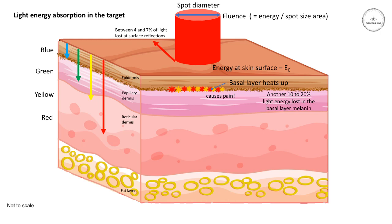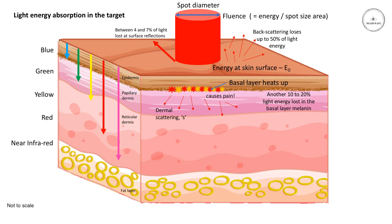The light that does get into the dermis is then scattered about all over the place. Some of it will be backscattered out of the skin and lost into the environment — that could be quite a substantial amount. The remainder, which does finally get down to the target, will be partially absorbed, and this will cause the temperature rise that we're trying to achieve. The principle of selective photothermolysis is that we try to match the incoming wavelength with the absorption coefficient of the target.